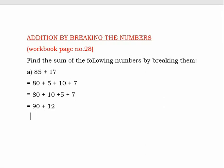80 plus 10 is equal to 90, and 5 plus 7 is equal to 12. So we get 90 plus 12, which is 102. The final answer is 102. We broke the numbers: 85 became 80 plus 5, and 17 became 10 plus 7.